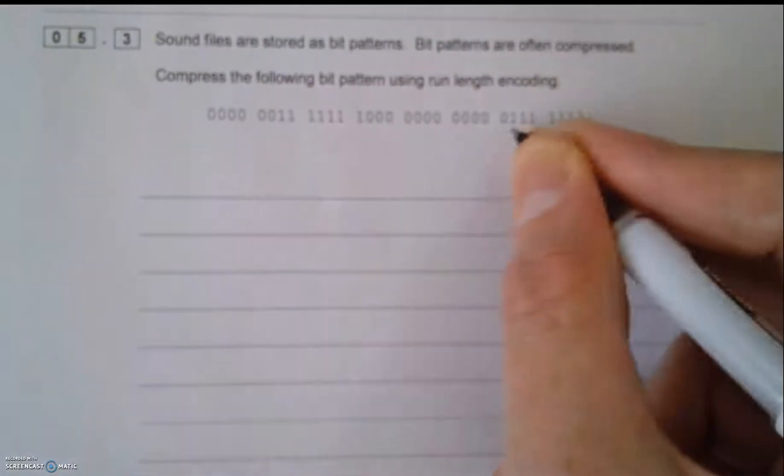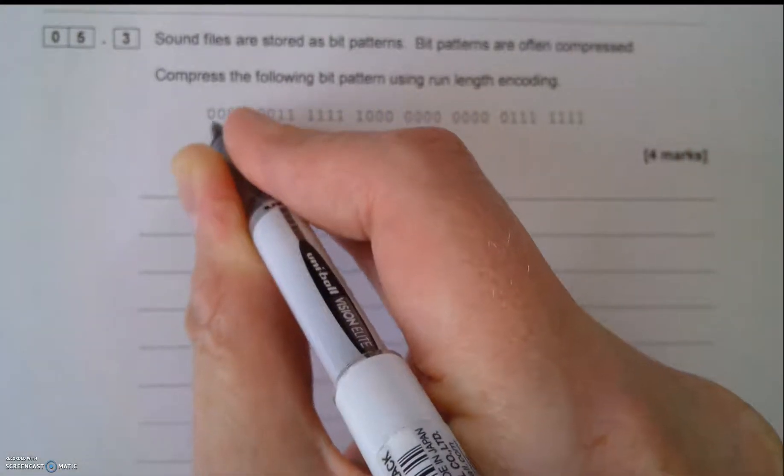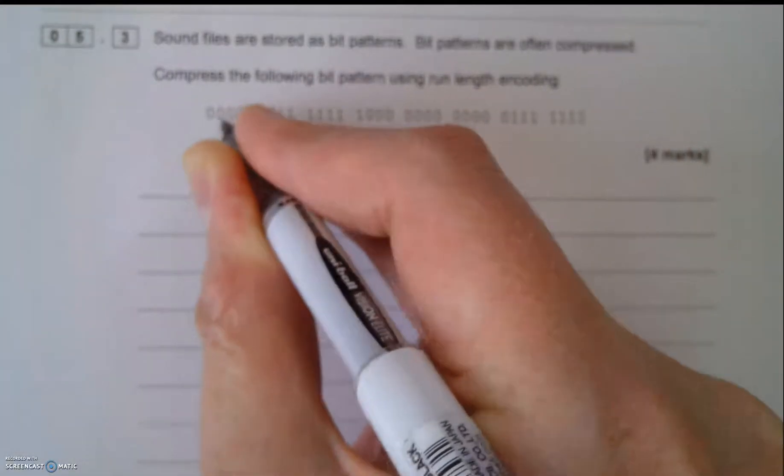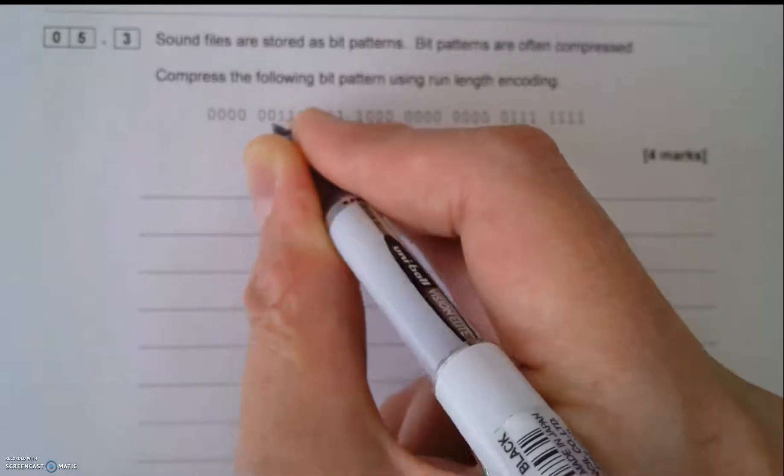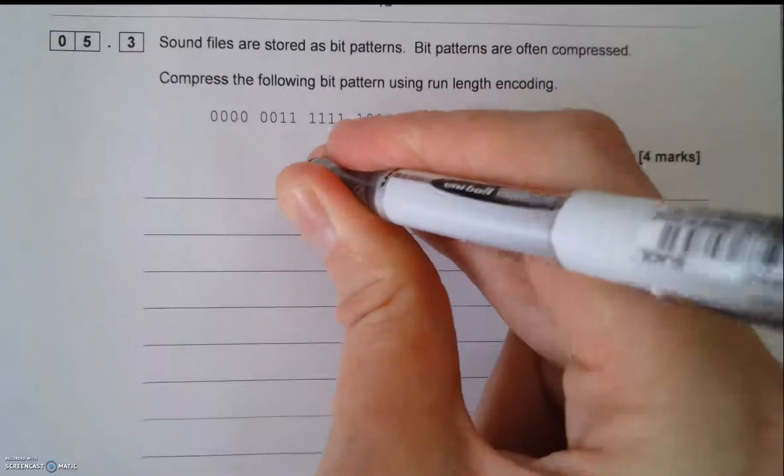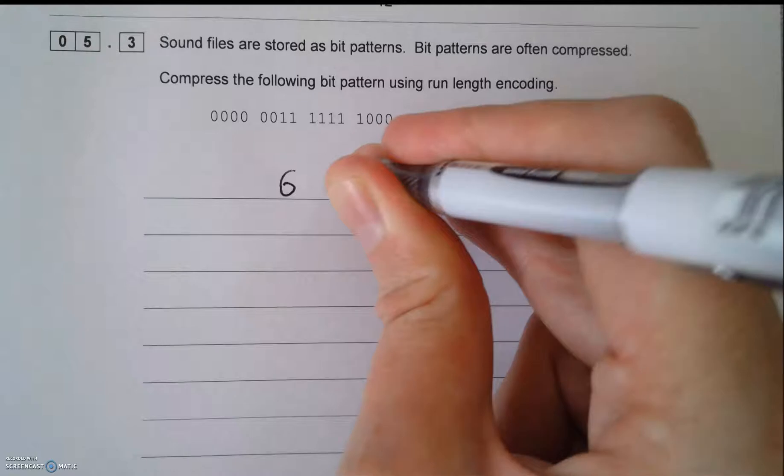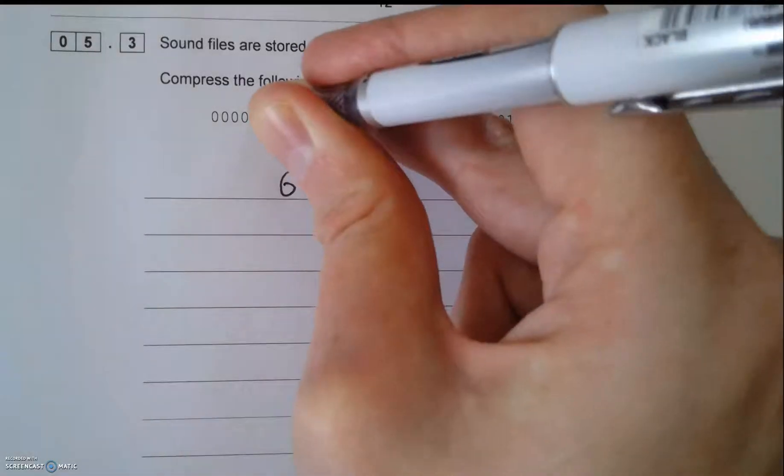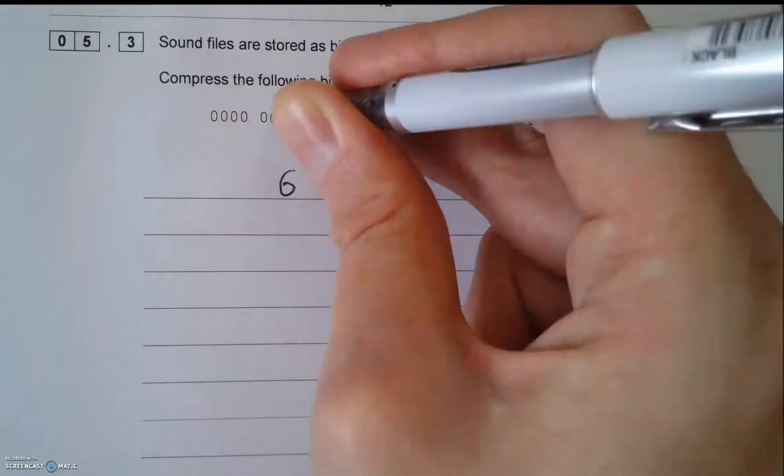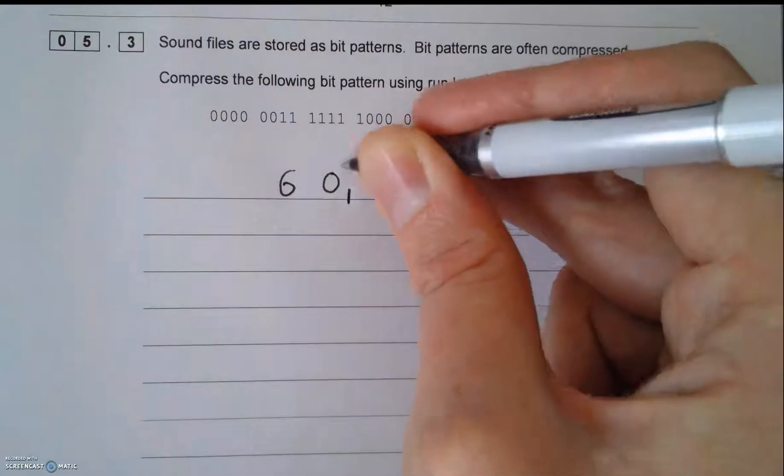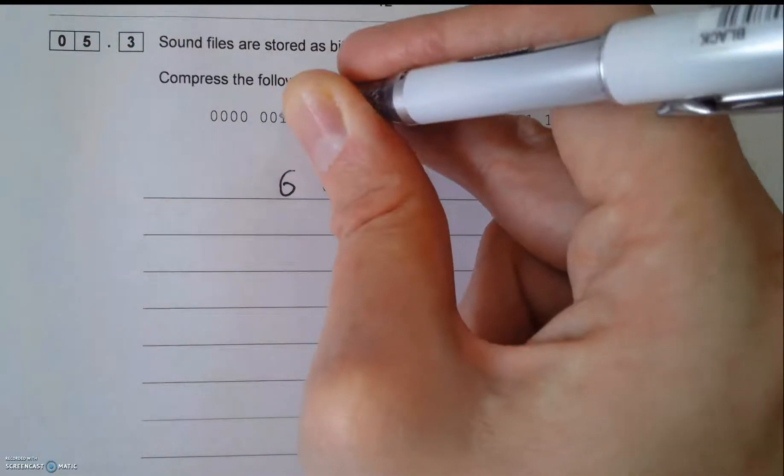I'm going to count the number of zeros that I've got first: one, two, three, four, five, six. So write down six, zero, comma. Ignore the space there. I'm just recording the amount of zeros that I've got.